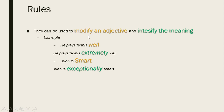The next rule says that adverbs can be used to modify an adjective. Remember, adjectives are characteristics. They are also used to intensify the meaning of something. Here we have our first example: 'He plays tennis well.' Now the next example with the adverb, shown in green, intensifies the meaning: 'He plays tennis extremely well.' What we have in yellow is the adjective; what we have in green is the adverb. Next example: 'Juan is smart' becomes 'Juan is exceptionally smart.'